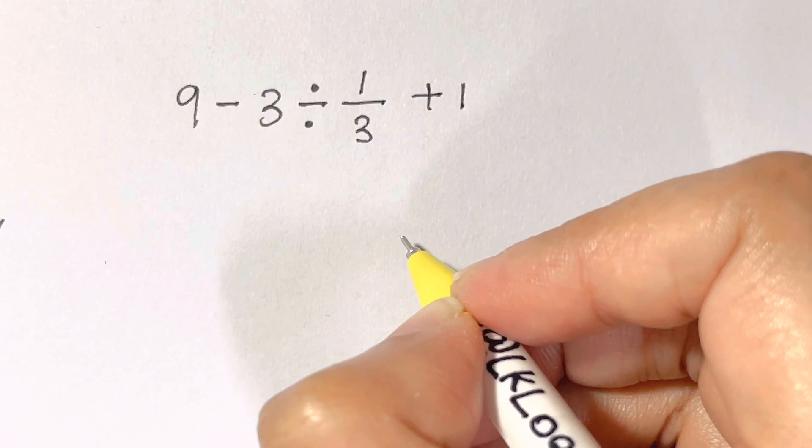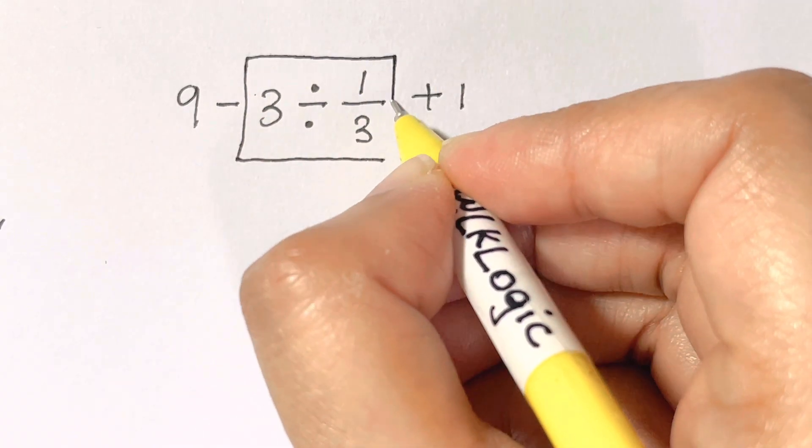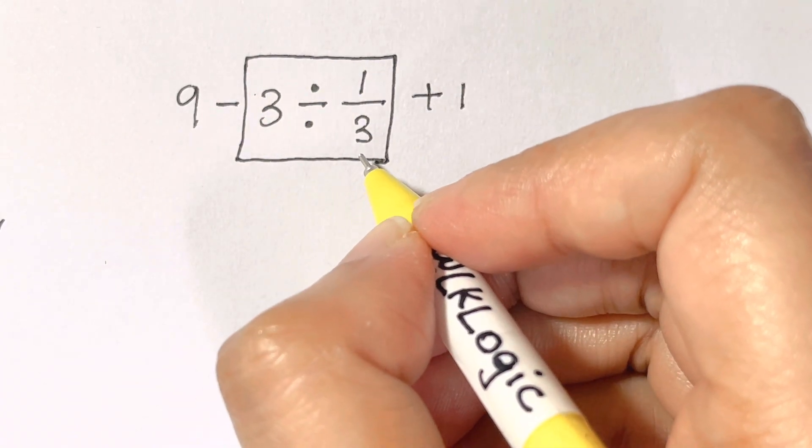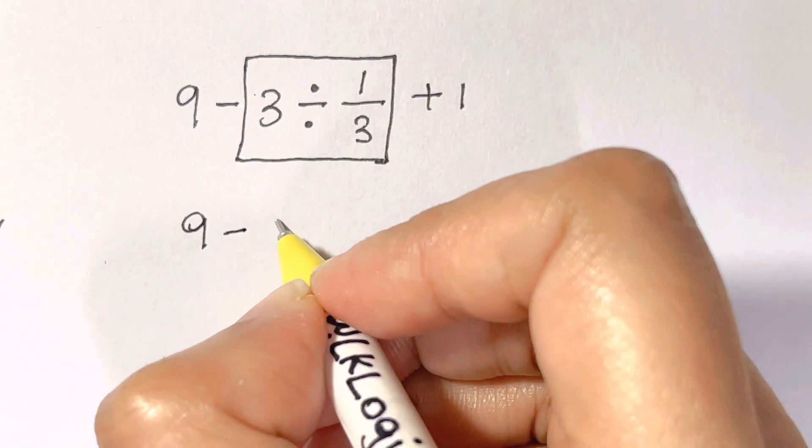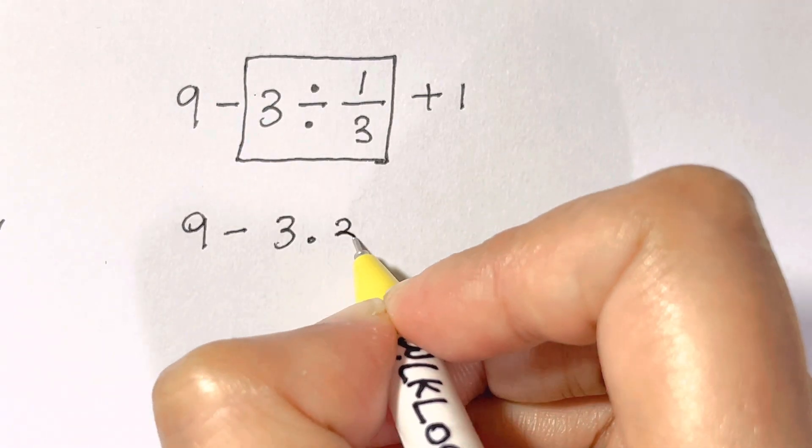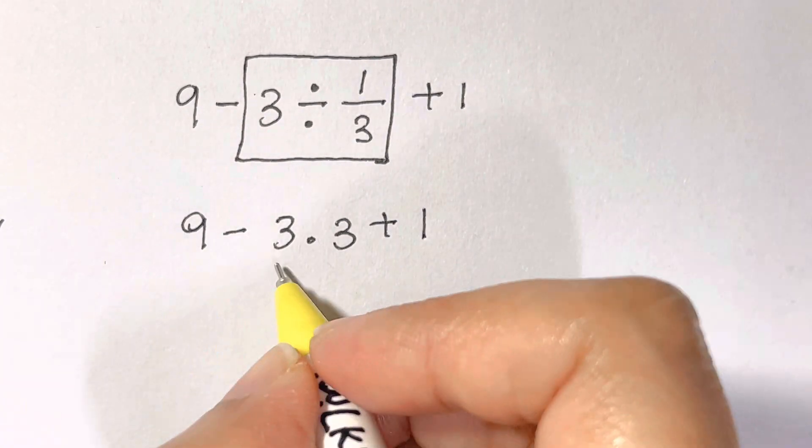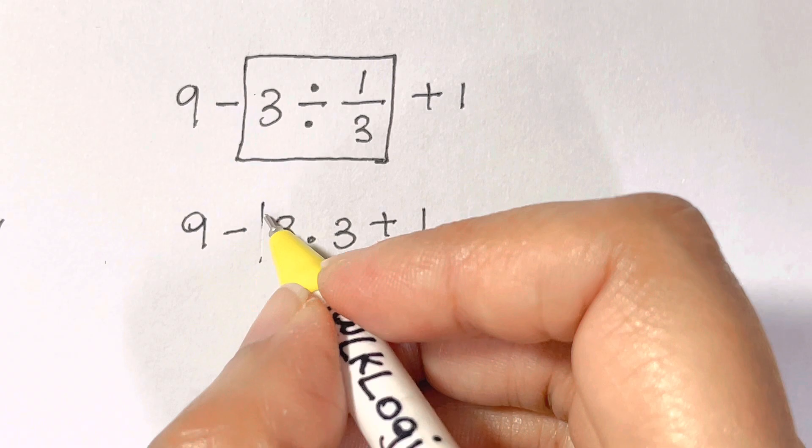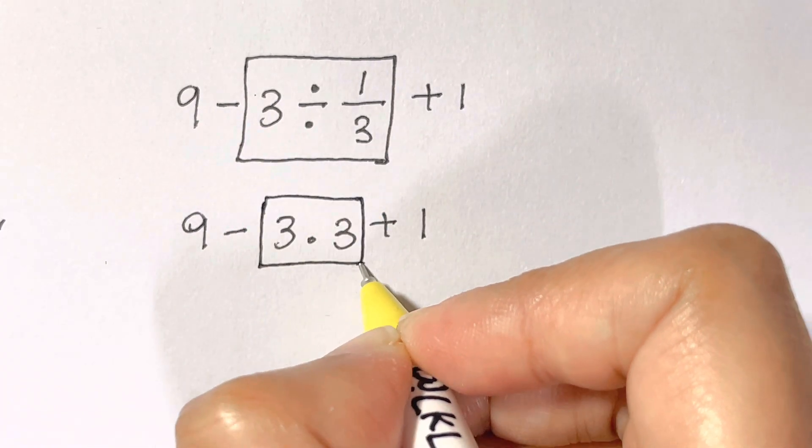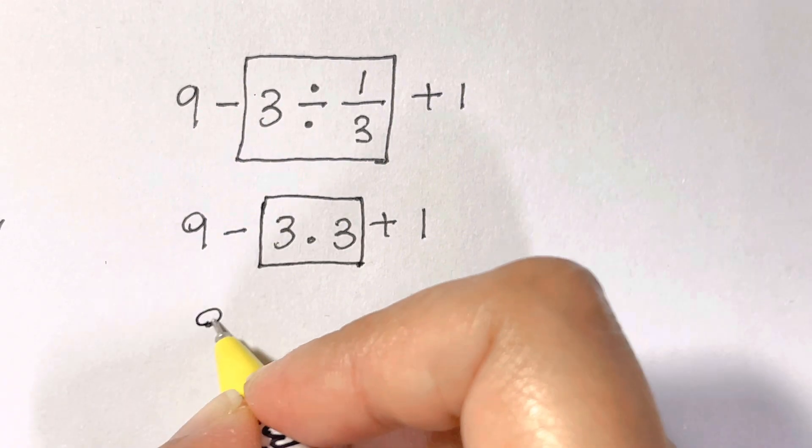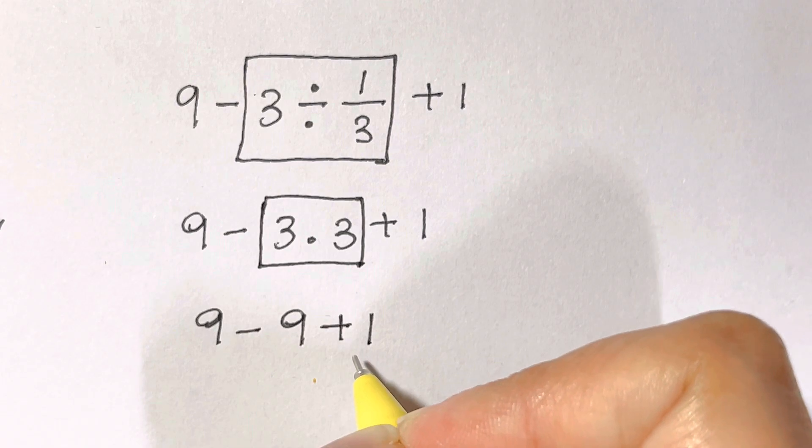So let's get to that. We have no parenthesis or brackets in this expression, and we also don't have any exponents or orders. We do have a division here, which is 3 ÷ 1/3. So let's evaluate this first: 3 ÷ 1/3 is the same thing as 3 multiplied by the reciprocal of 1/3, which is 3. We now have a multiplication of 3 × 3, which equals 9.